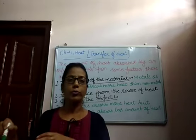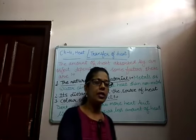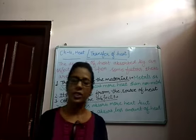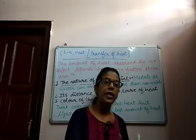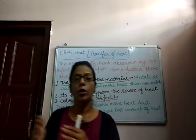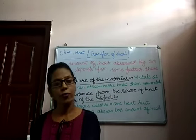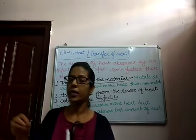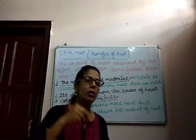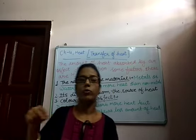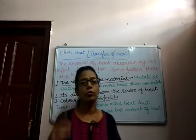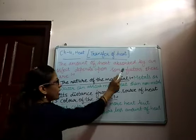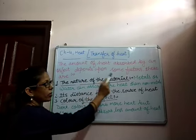When this heat energy falls on any object, some part of it is reflected, some part is transmitted, and some part is absorbed by the object it falls on. Due to this absorbed heat energy, the temperature of the object increases, because the object absorbs some amount of heat from the source. So we can say the amount of heat absorbed by an object depends upon some factors, as different objects absorb different amounts of heat.